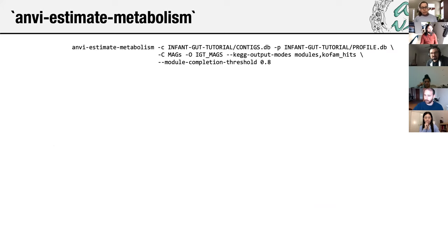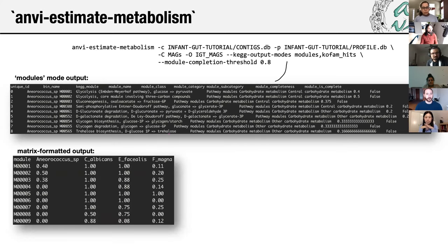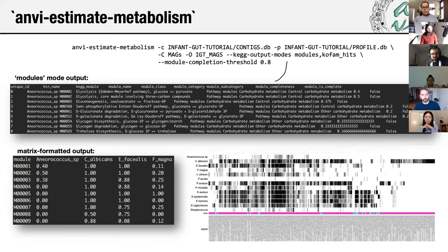ANV-estimate-metabolism provides a variety of output files. One type is long-format tab-delimited output listing information about each metabolic module including how complete it is, for every bin in the collection. Another output option is matrix format, in which every column is a genome or bin and every row is a module — a matrix of module completeness scores. The advantage is that it can be easily visualized, for example as a heat map of module completeness generated in ANV-interactive. This is a new feature in V7 that's still being actively developed, and I'd appreciate the community testing it and sending feedback.